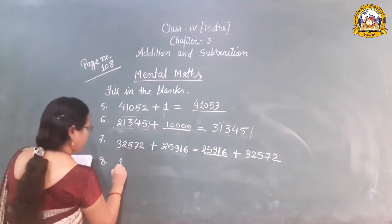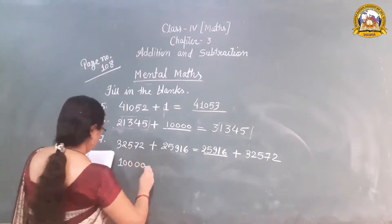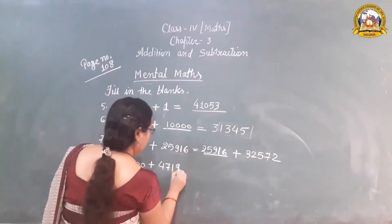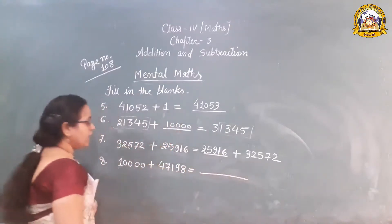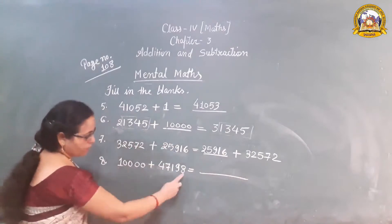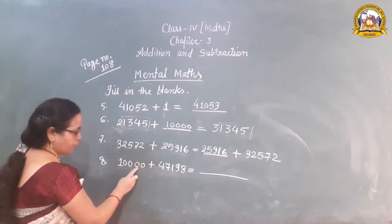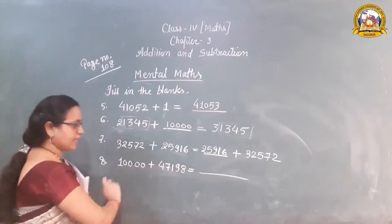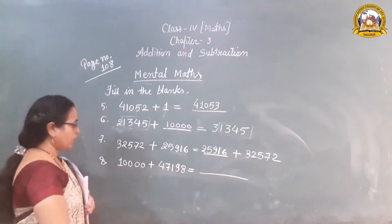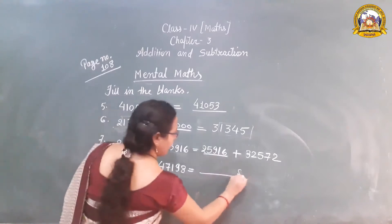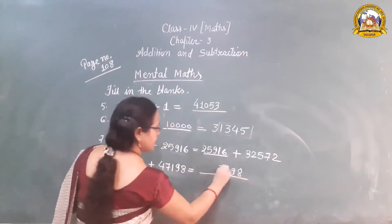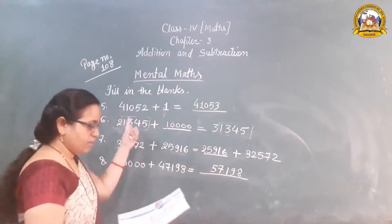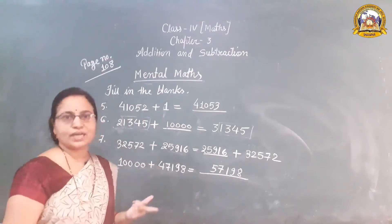Question number 8: 10,000 plus 47198 equals dash. Let's check the number of digits in both numbers — both have 5 digits. Now add the numbers: 8, 9, 1, 7, and 4 plus 1 is 5. That is our answer. You should try to solve it quickly since this is mental maths.